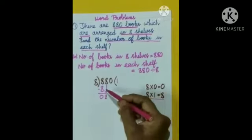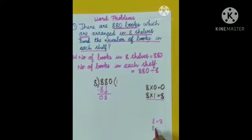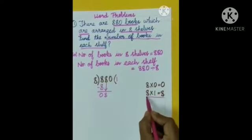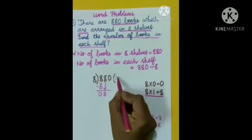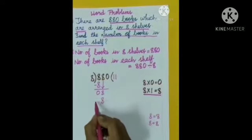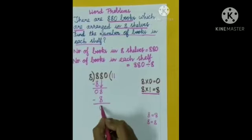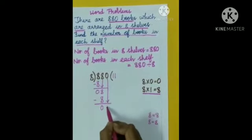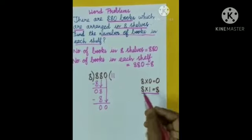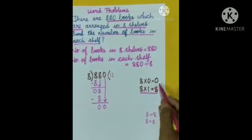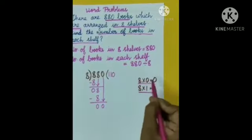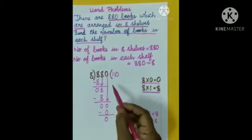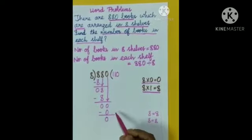Compare 8 with the divisor 8 — 8 is equal to 8. From the table of 8, 8 ones are 8. We write 1 in the quotient and 8 under 8, then subtract: 8 minus 8 equals 0. Lastly, bring down the next digit, which is 0. From the table of 8, 8 zeros are 0. We write 0 in the quotient, subtract 0 minus 0 equals 0. As there are no more digits to bring down, the division is completed.